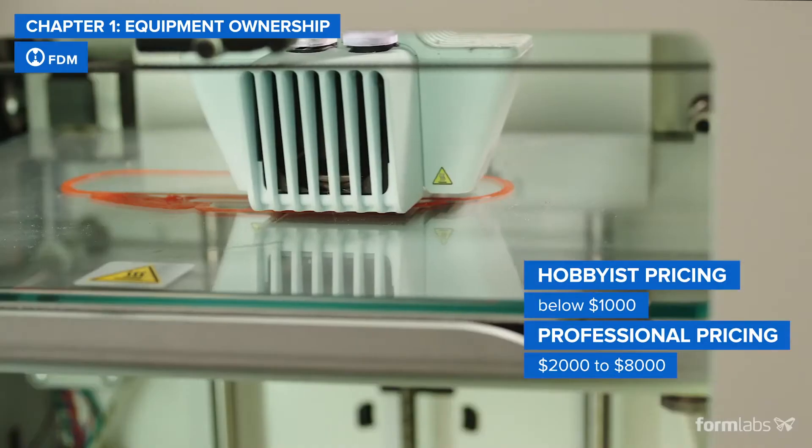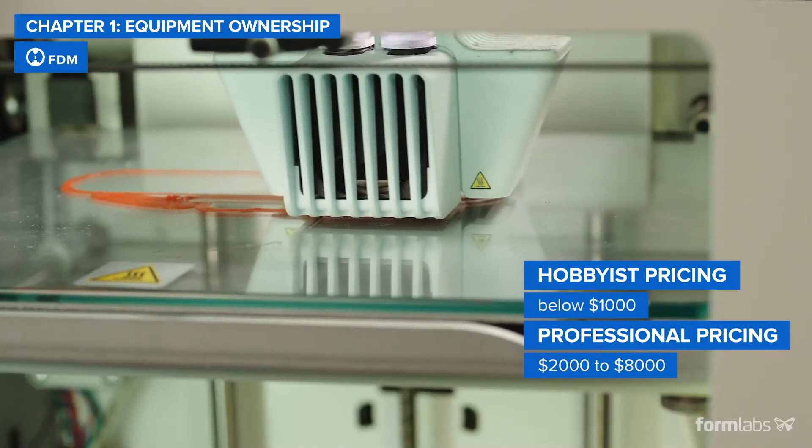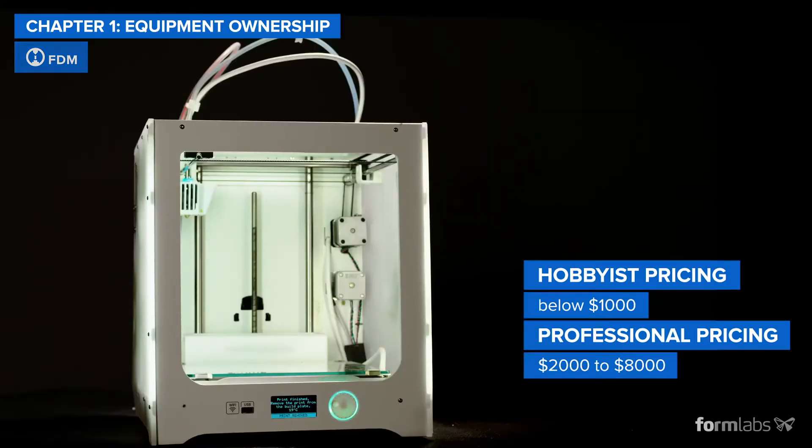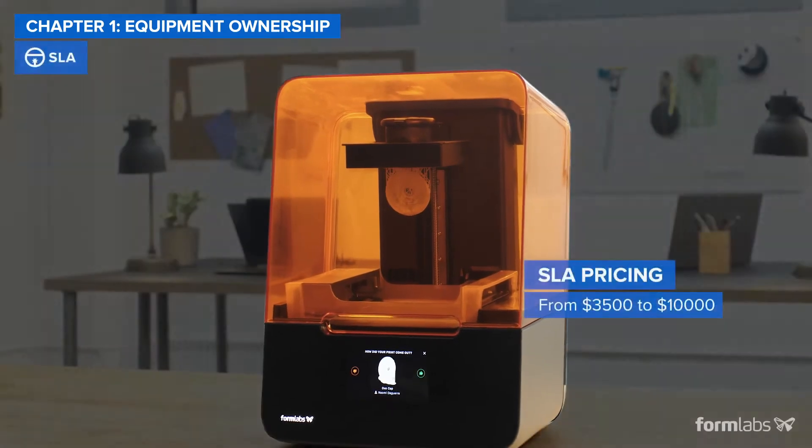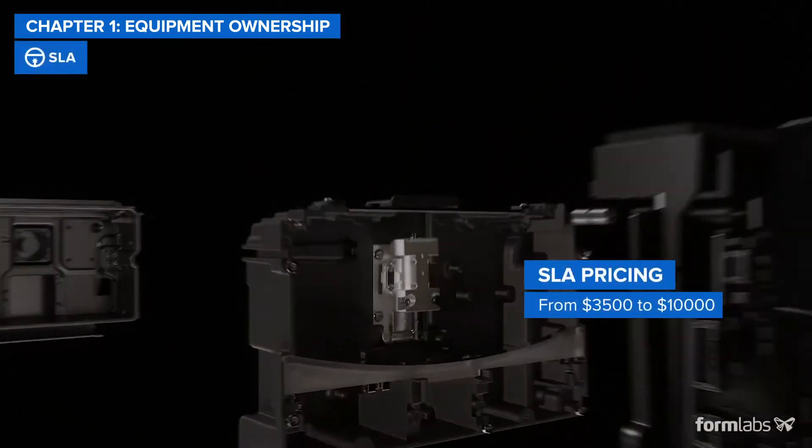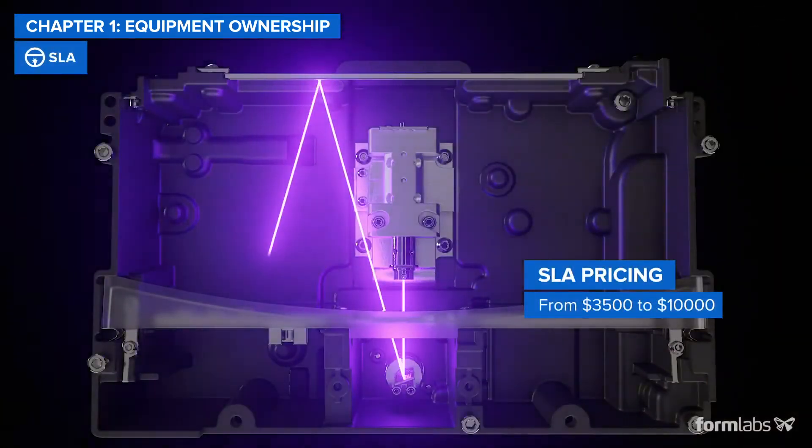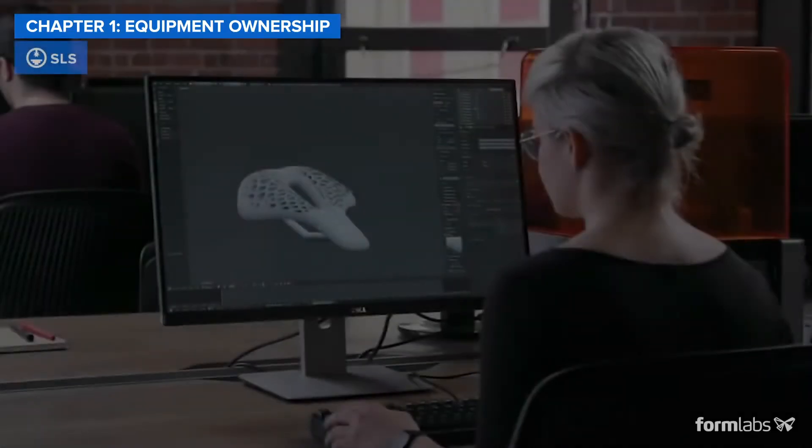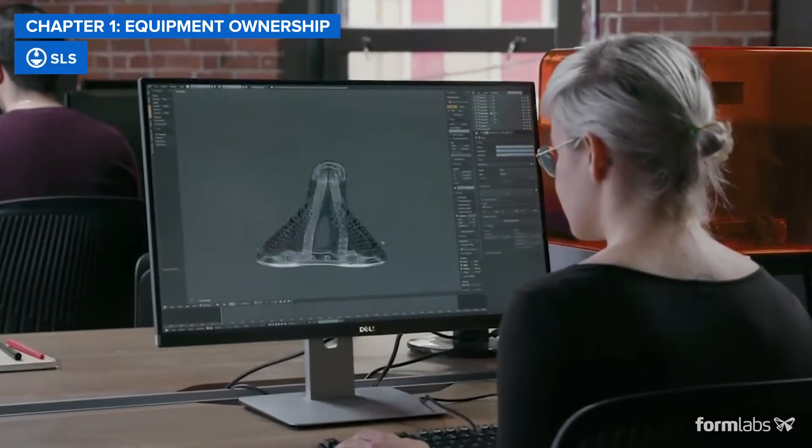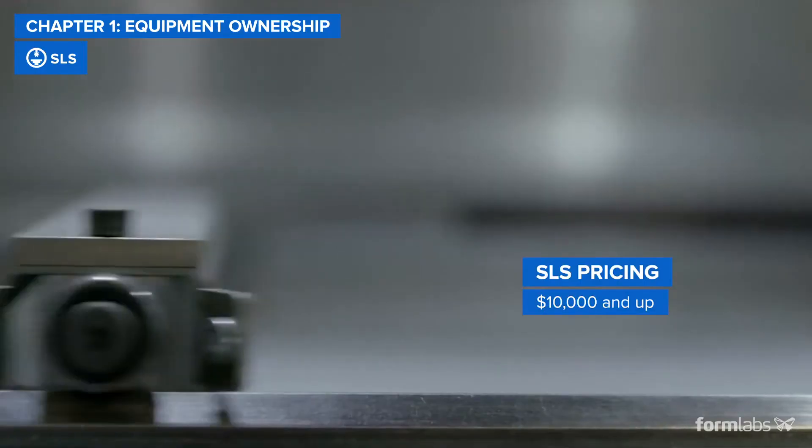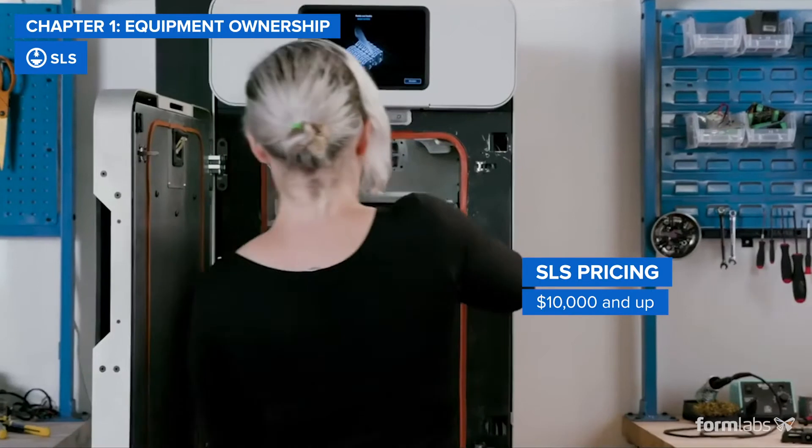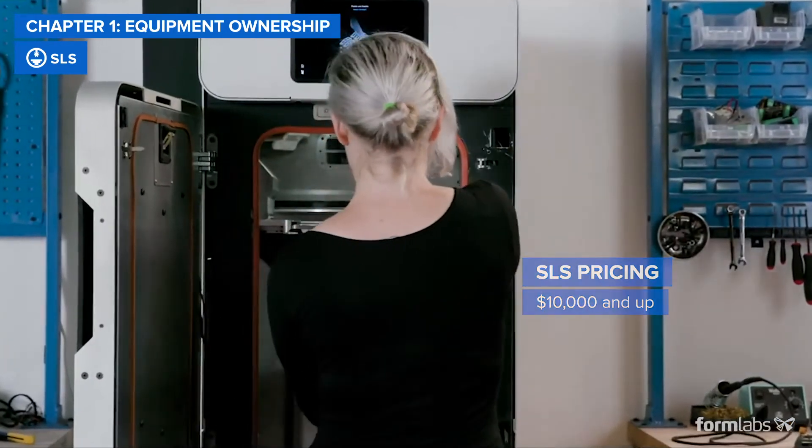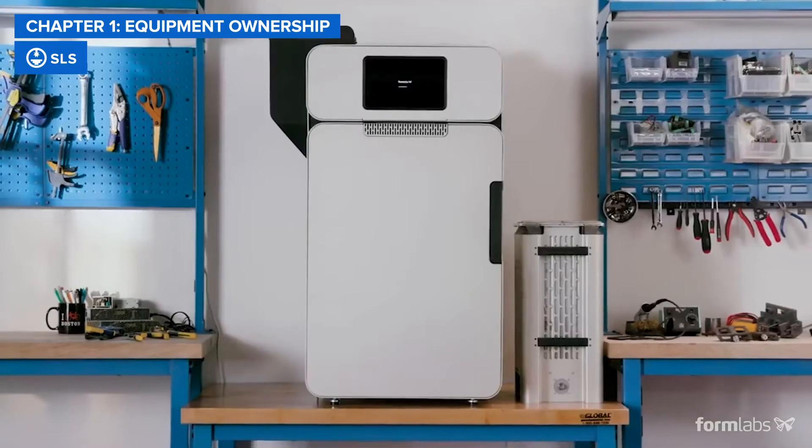Generally, FDM 3D printers offer the lowest entry cost to 3D printing. SLA 3D printers offer higher accuracy and a much smoother surface finish at the lowest cost, but generally carry a marginally higher price tag. SLS 3D printing has only recently become available in smaller, more affordable benchtop solutions, but it's still priced considerably higher than both FDM or SLA.